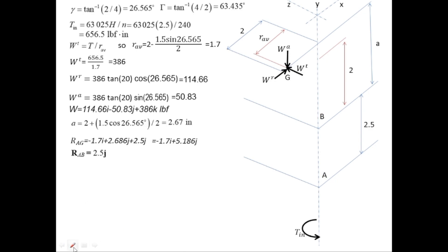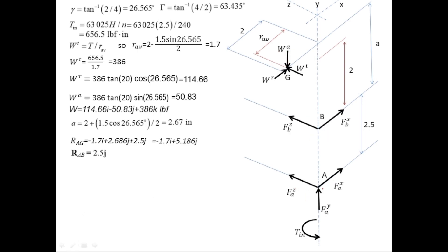Now let's draw the reaction forces at bearing A in x, z, and y directions, writing all in positive directions — the true directions will be determined later. The thrust load is in the positive y direction. Reaction forces at bearing B are in x and z directions only; there is no y reaction since thrust is taken by bearing A. The moment at point A equals r_AG × W + r_AB × FB + torque T, where FB = FBx·i + FBz·k.